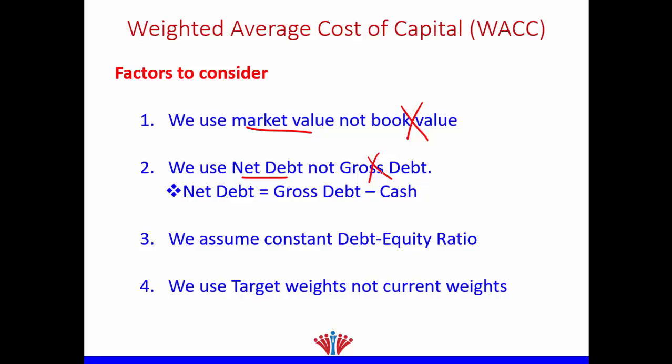The third factor we need to take into consideration is we use a constant debt-to-equity ratio, which means we assume a constant debt-to-equity ratio in our WACC calculation. This means the percentage of debt doesn't change. Consequently, this happens only at the maturity phase of the company life cycle.